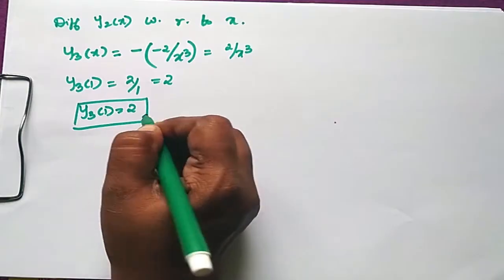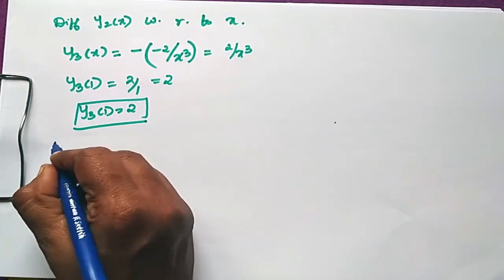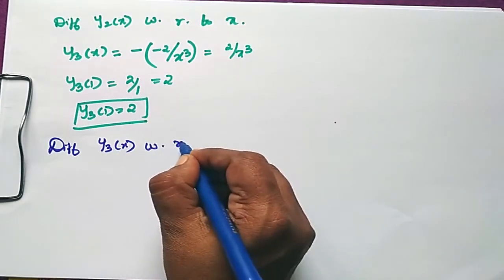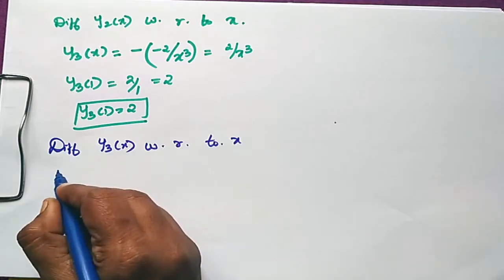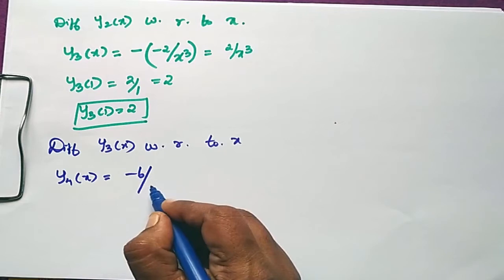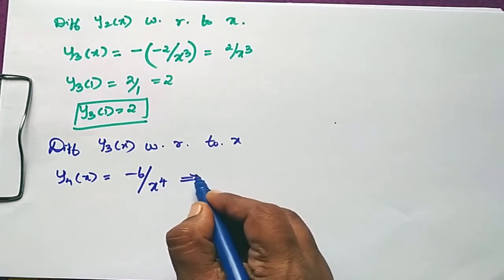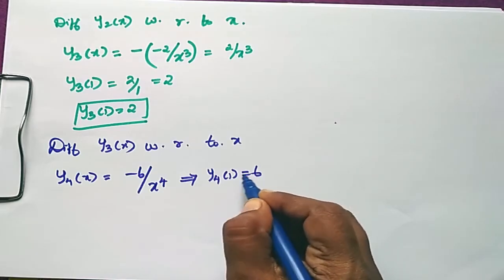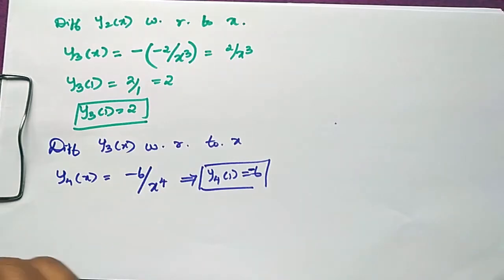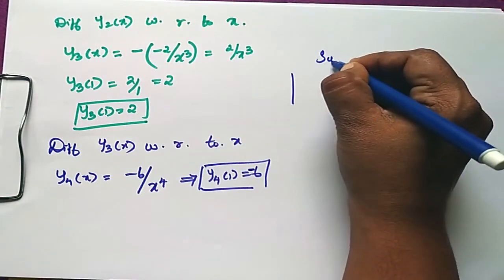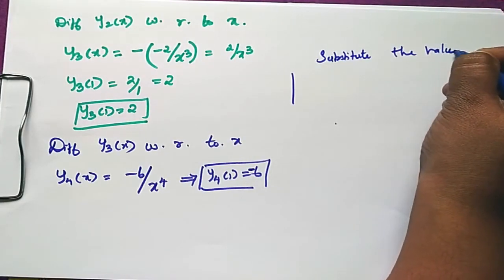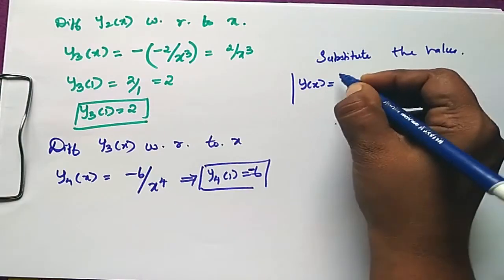Now differentiate y₃(x) with respect to x to get y₄(x) = −6/x⁴. Therefore y₄(1) = −6.